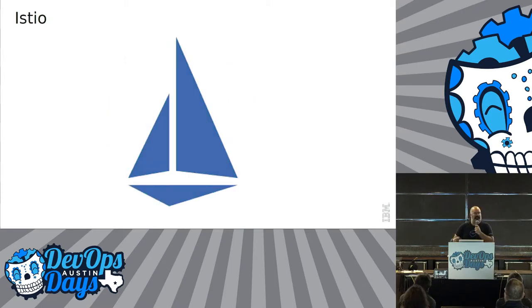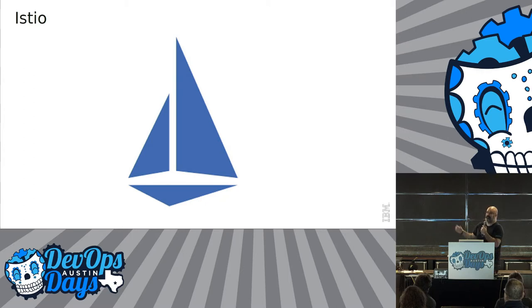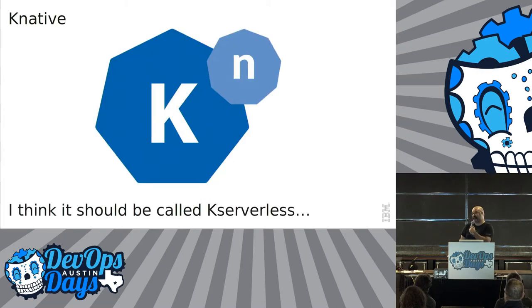Istio. With vanilla Kubernetes you have a very basic way of getting things done. You'll very quickly discover, as you move to microservices, you need red-green deployments and intelligent routing. Istio is a way to answer that. It is extremely advanced, but it is fun to use and it's worth it.